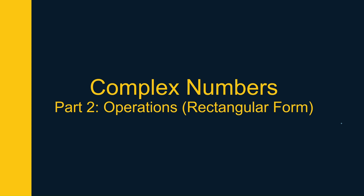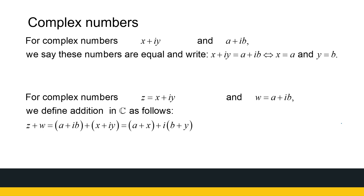So we now know what a complex number is — we've defined it. The first thing we're going to define is what it means for two complex numbers to be equal. It's an obvious definition, but it needs to be stated. If I have two complex numbers x plus iy and a plus ib, then those two numbers are equal if x equals a and y equals b. They're equal if the real components are the same and the imaginary components are the same.